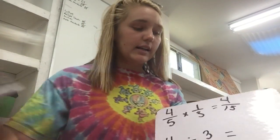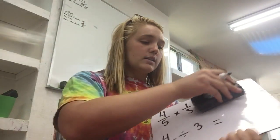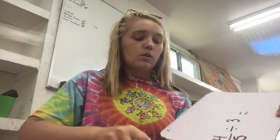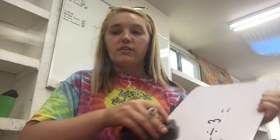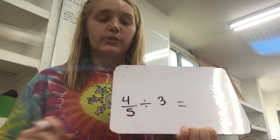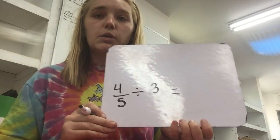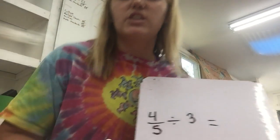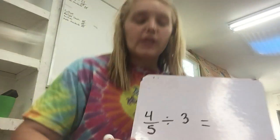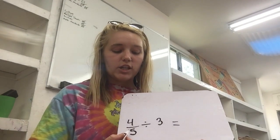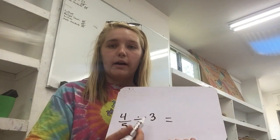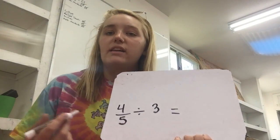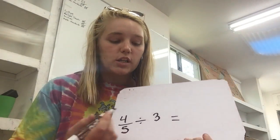But if you decided to do it the second way, which is four-fifths divided by three, this way was a little bit more tricky, but I'm going to explain that to you now. When you have a fraction divided by a whole number, you have to do something called the inverse operation.